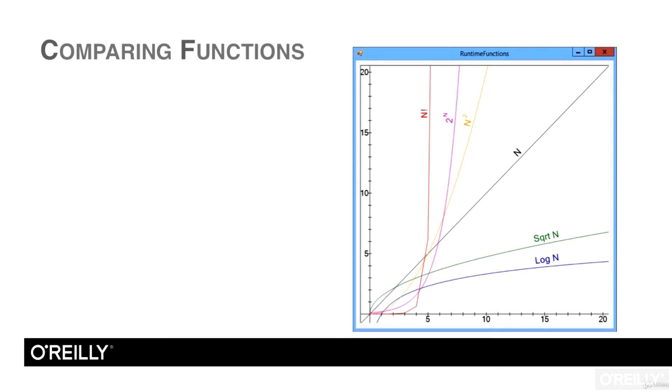This graph shows some of the most common runtime functions. The graph was generated by the runtime function's C-sharp program, which is included in this lesson's working files. I had to scale some of the functions to make them fit nicely on the same graph, but you can see each function's general shape, and that can tell you how they compare to each other.